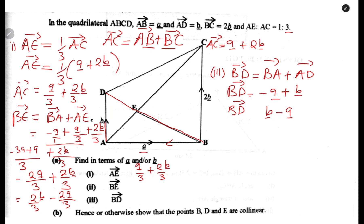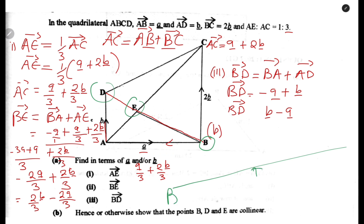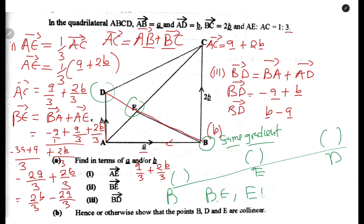Now, question B — this is where I want you to pay particular attention. Question B says: hence or otherwise, show that points B, D, and E are collinear. Collinear points lie on the same straight line. The condition for collinearity using coordinates is that they share the same gradient — the gradient of BE, ED, and BD should all be the same.